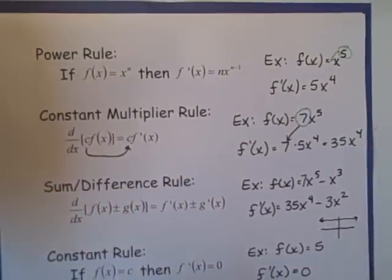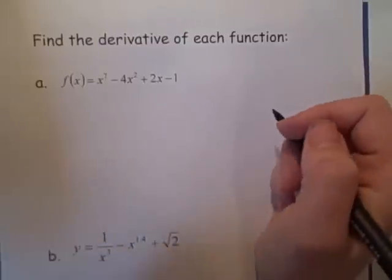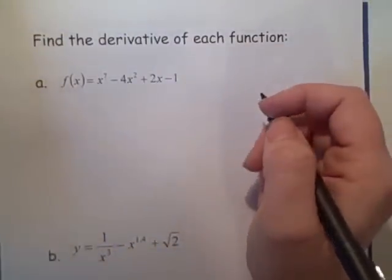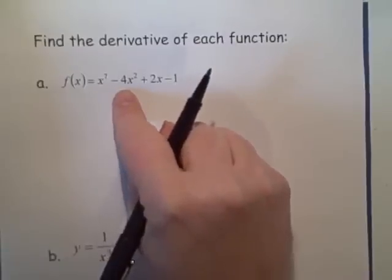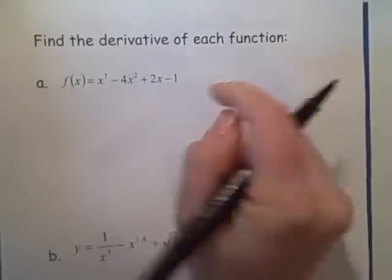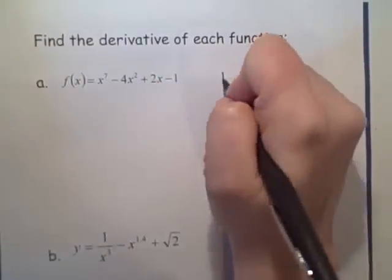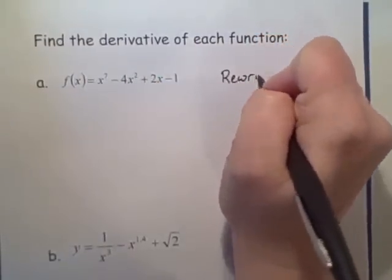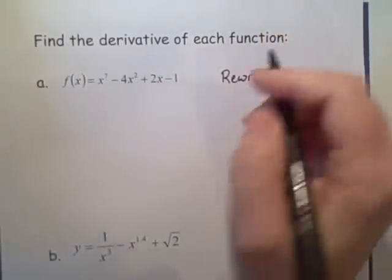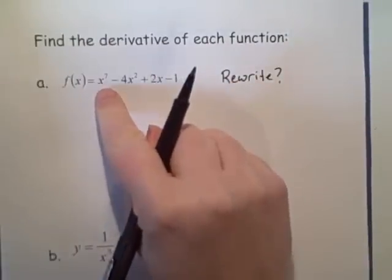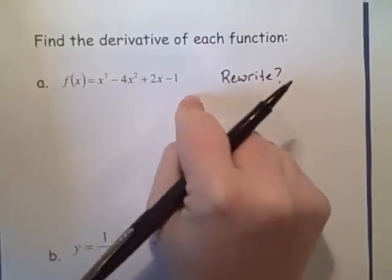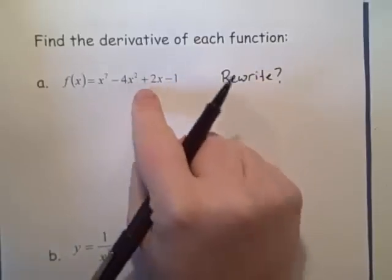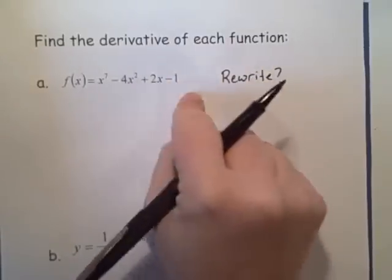So now let's look at some examples. We're going to find the derivative of the next few functions. We have f of x equals x to the seventh minus four x squared plus two x minus one. The first thing I always ask myself is: do I need to rewrite this so that it looks like powers of x, with no x's in the denominator or any roots to deal with? In this case, I don't have any work to do to rewrite it.